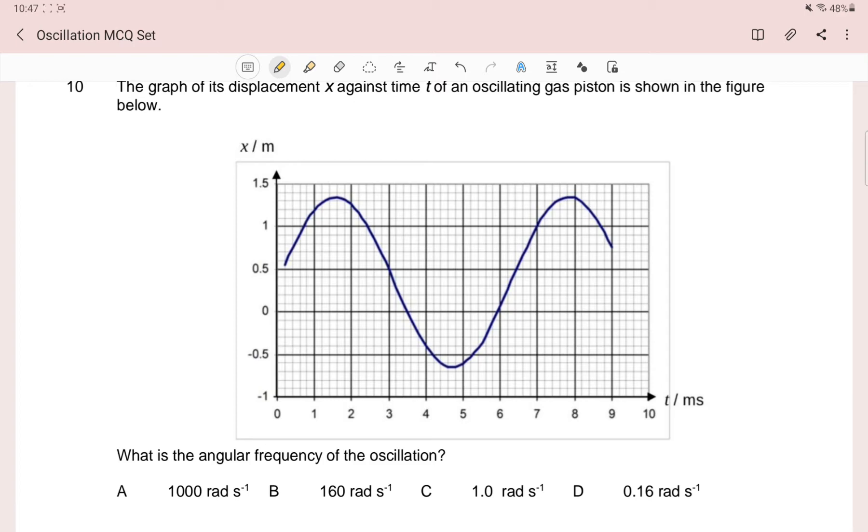Question 10, you have an X against T graph. You can see that this graph is not symmetrically distributed.